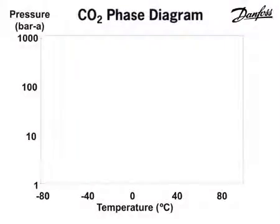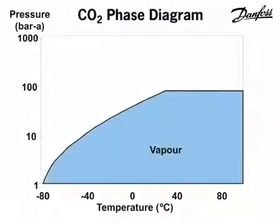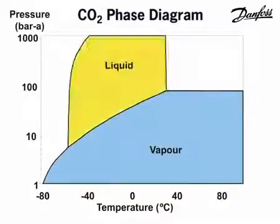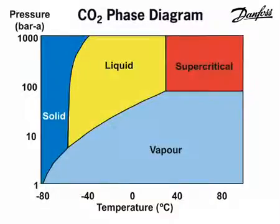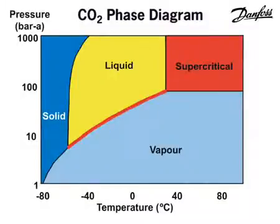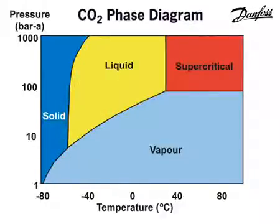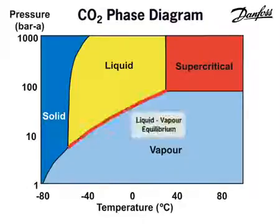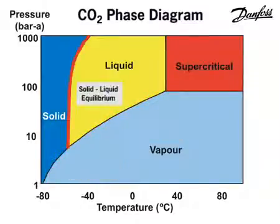In this diagram, the coloured areas define the temperature and pressure limits at which the CO2 vapor, liquid, solid and supercritical phases exist. This is known as the temperature pressure diagram, or phase diagram, for pure CO2. The red solid lines indicate the pressure and corresponding temperatures at which two different phases of CO2 exist in equilibrium — for example, liquid and vapor, solid and vapor, and solid and liquid.